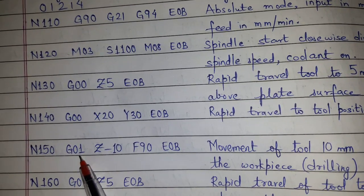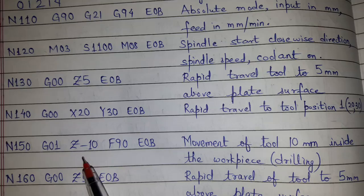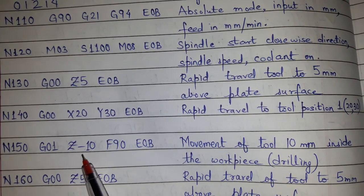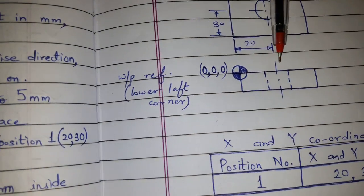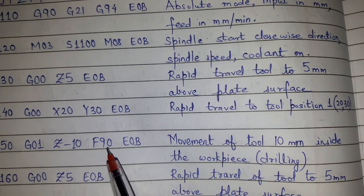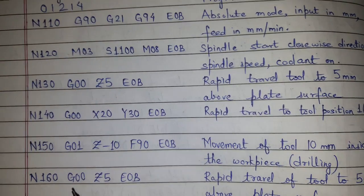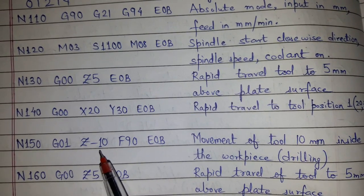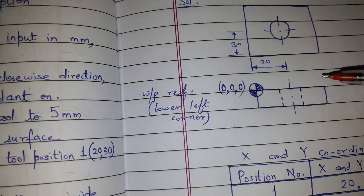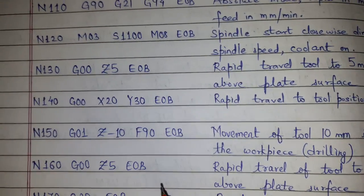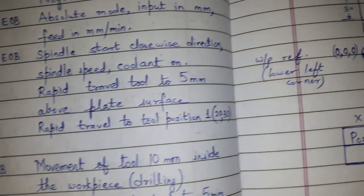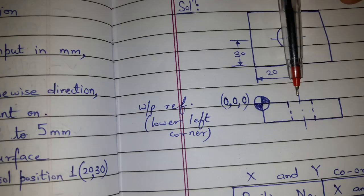Now we define G01 for linear interpolation and Z minus 10, because the plate thickness is 10 mm. The minus sign means the drill bit goes past the workpiece to complete the drilling. The feed is set as F90. The total travel is 15 mm — 5 mm above the workpiece plus 10 mm through it. After drilling, the drill bit returns 5 mm above the job.